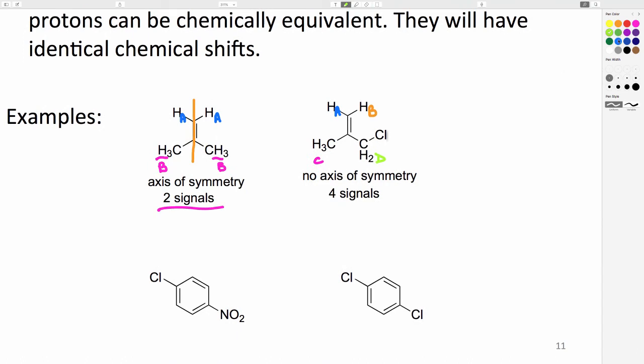The bottom left benzene ring has a plane of symmetry that cuts right through the two substituents. There are two protons that we can call HA. They are closer to the chlorine, or ortho to the chlorine. Then there are two protons that we can call HB. They are closer to the nitro group, or ortho to the nitro group. The HA's are chemically equivalent to each other, and the HB's are chemically equivalent to each other. We expect to see two signals in the proton NMR spectrum.